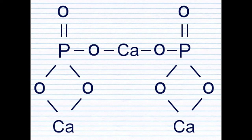It also occurs naturally in bone ash. As a consequence, vegans and others following strict no-animal diets have to be particularly careful, since tricalcium phosphate obtained from bone ash may be present in foods they would otherwise eat.